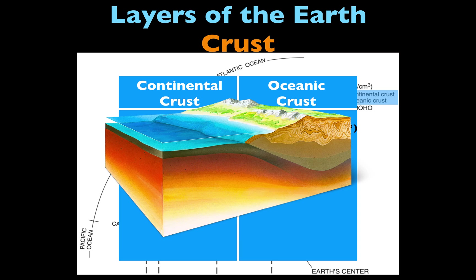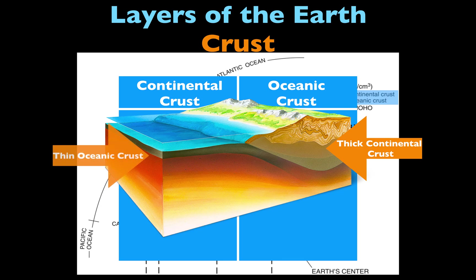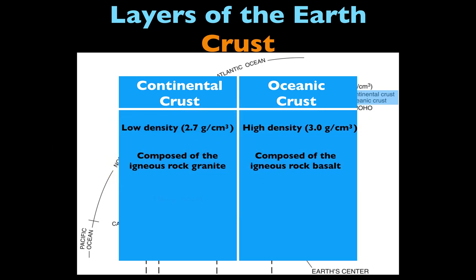There's one more property that's different between the continental and oceanic crust, and that's their thickness. The continental crust, which consists of the crust that makes up our continents, is much thicker compared to the oceanic crust. So continental crust is considered to be thick, while the oceanic crust is considered to be thinner.